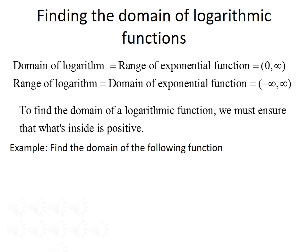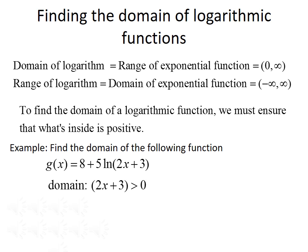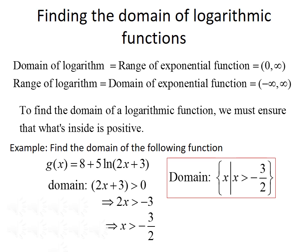For example, find the domain of g of x equals 8 plus 5 times the natural log of 2x plus 3. We need to make sure that what's inside the logarithm is greater than 0, so we solve 2x plus 3 greater than 0. Subtracting 3 from both sides gives 2x greater than negative 3, and dividing both sides by 2 gives x greater than negative 3 halves. In interval notation, the domain is the interval from negative 3 halves to infinity.